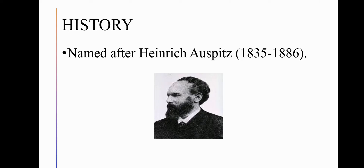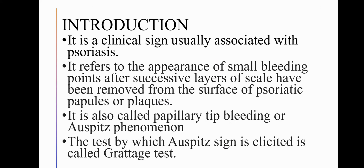It is named after Heinrich Auspitz, the individual shown in the image below. Auspitz sign is a clinical sign usually associated with psoriasis. It refers to the appearance of small bleeding points after successive layers of scales have been removed from the surface of psoriatic papules or plaques. It is also called Auspitz phenomenon or papillary tip bleeding. The test by which Auspitz sign is elicited is called the Grittage test.